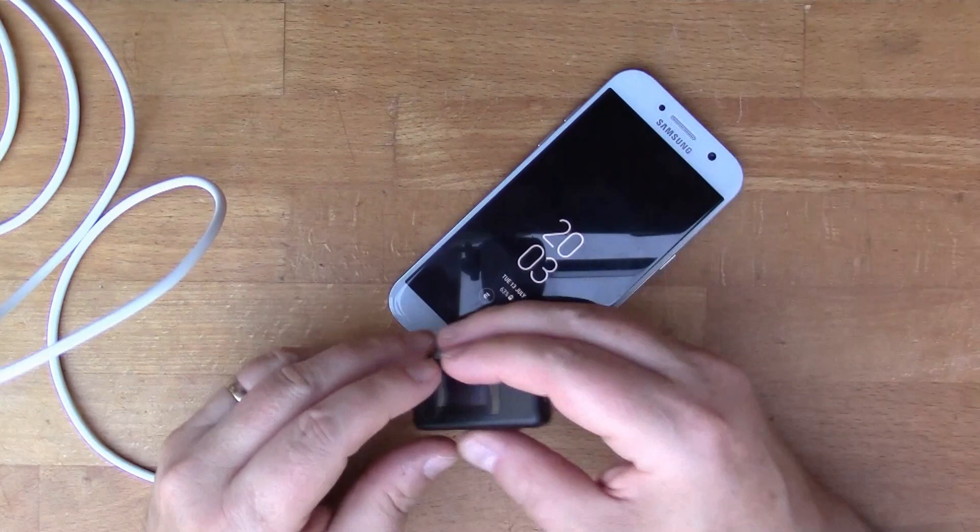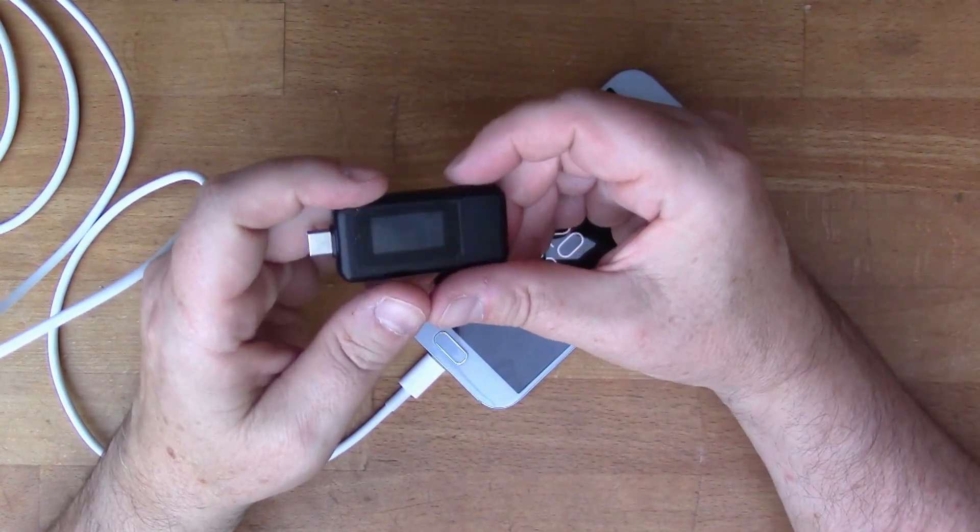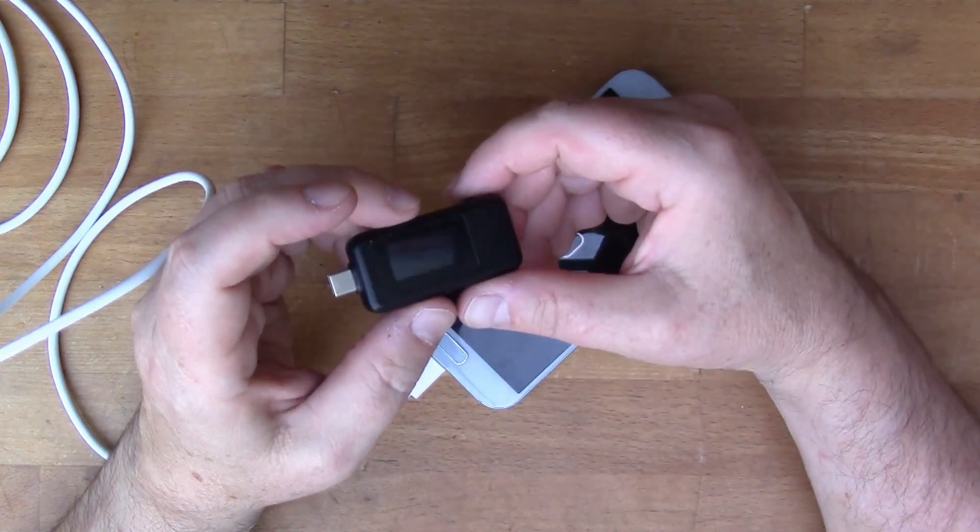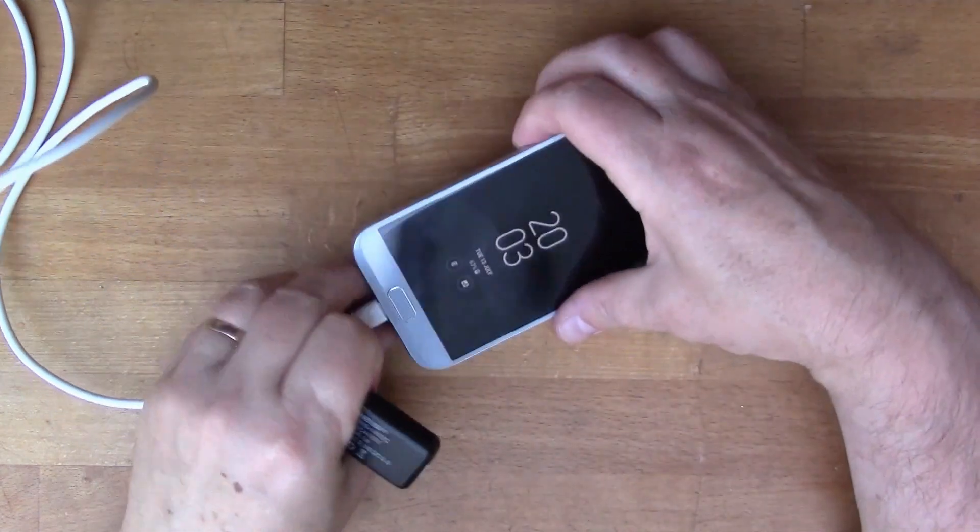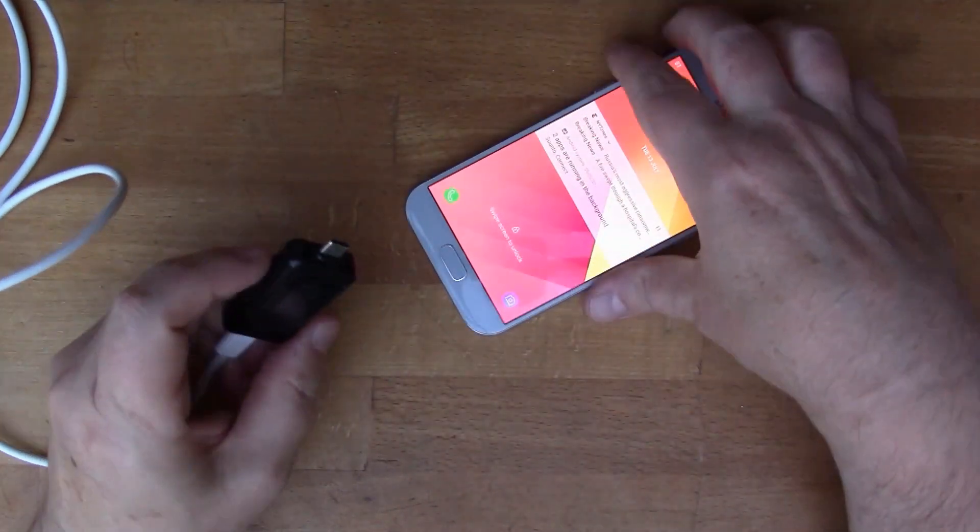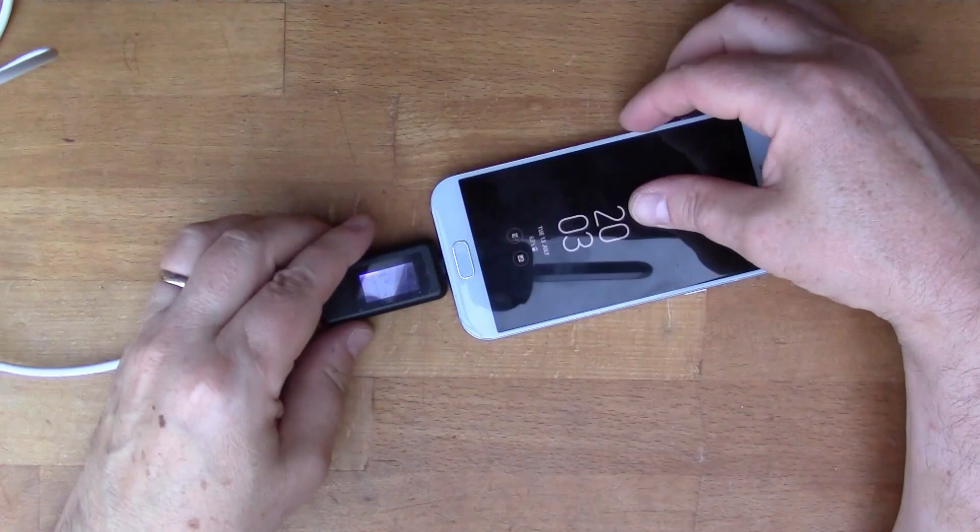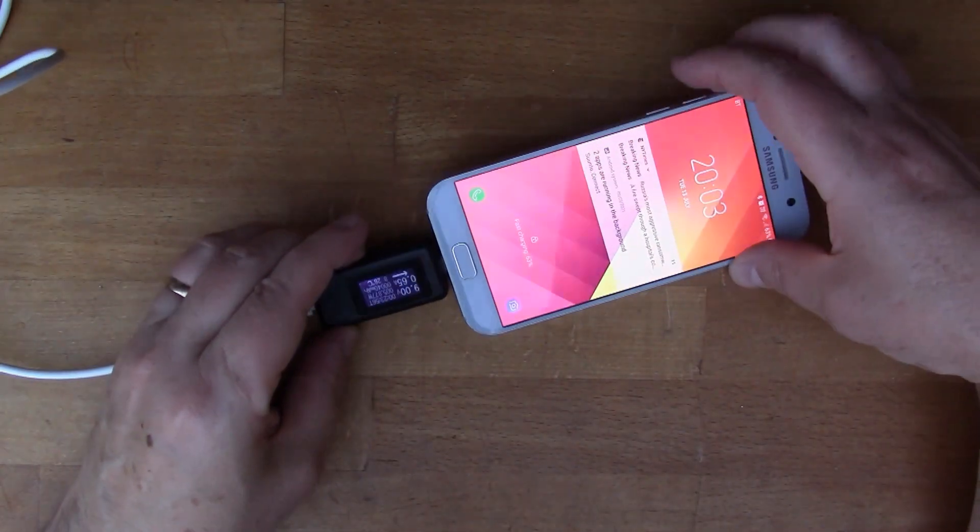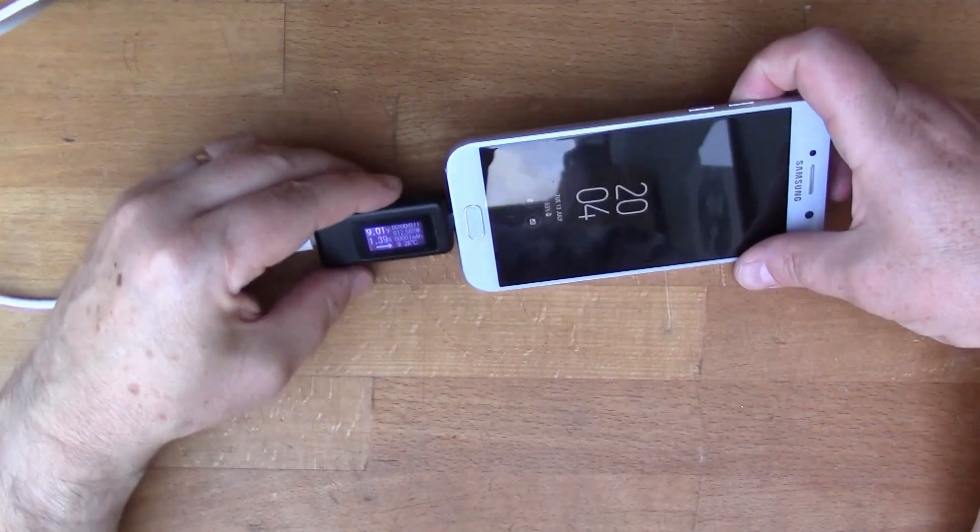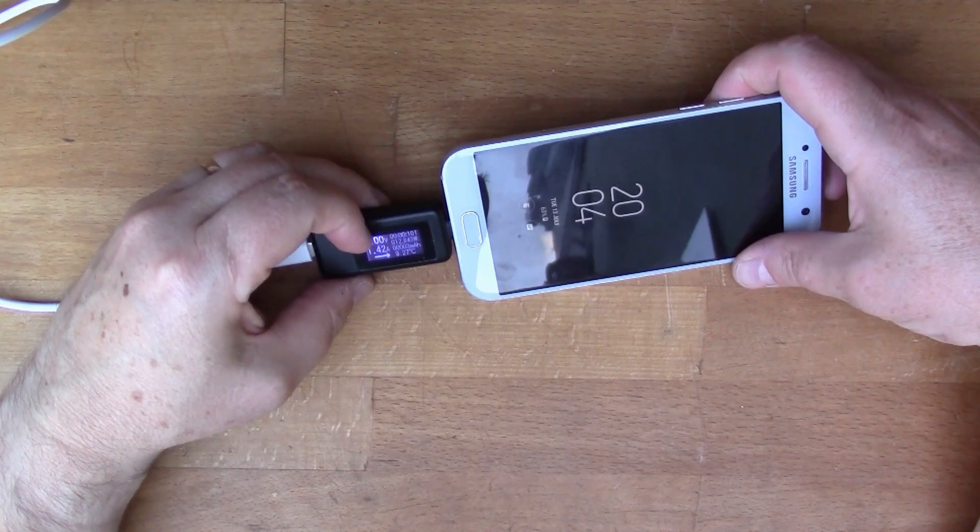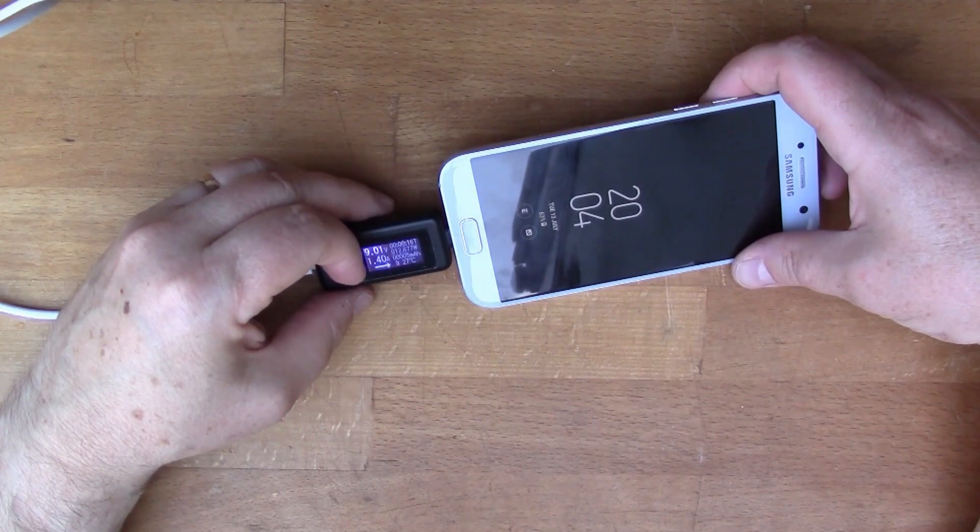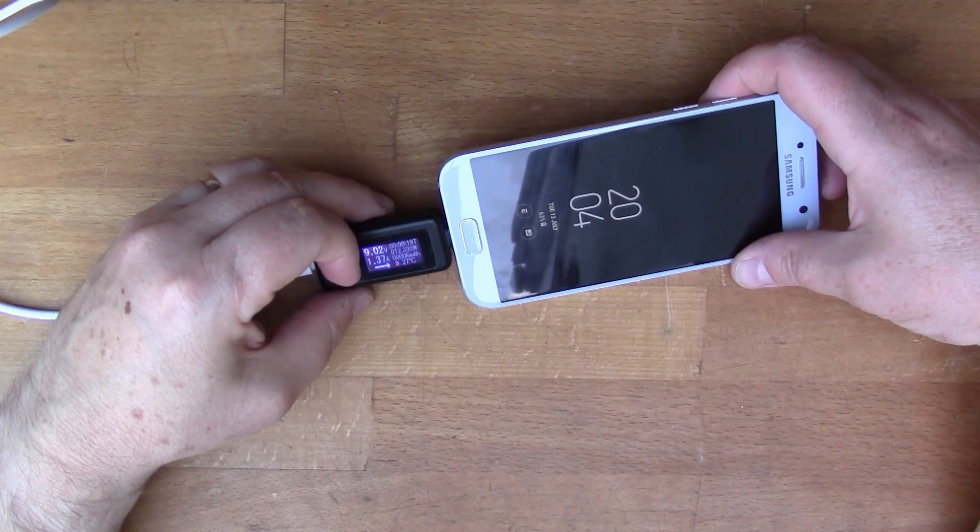So what we can do, I've got one of these little, sometimes called charge doctors. This is a USB-C style one. What this does is it measures the voltage and current, so you can put that in line and make measurements. So we'll plug that in. I think if we click this button, the display flips over. So that's saying 9 volts. It's negotiated up from 5 volts to 9 volts for the fast charge, and that's providing 1.4 amps.